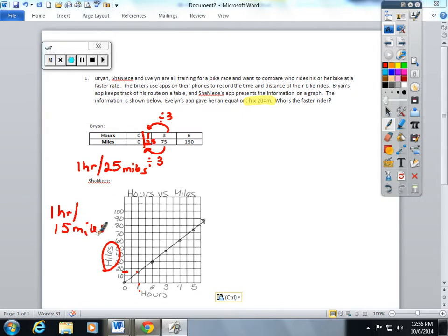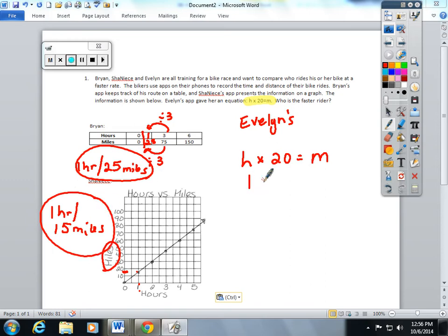And now for I think the hardest of them for the students, which I hope I can make easy: Evelyn, she has an equation. H hours times 20 equals M miles. Well, this is down to one hour. This is down to one hour. So we're going to sub one in for the hour. One times 20 is 20 miles. So one hour for Evelyn equals 20 miles.